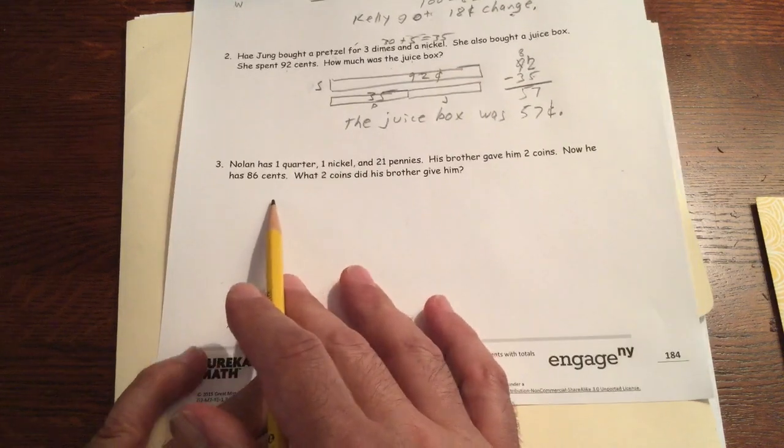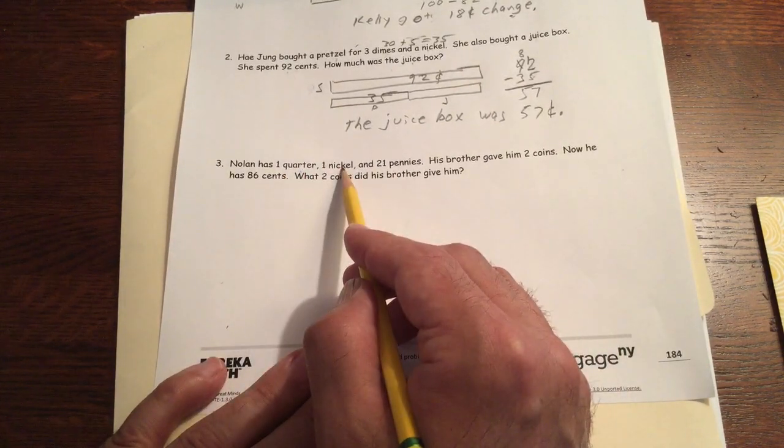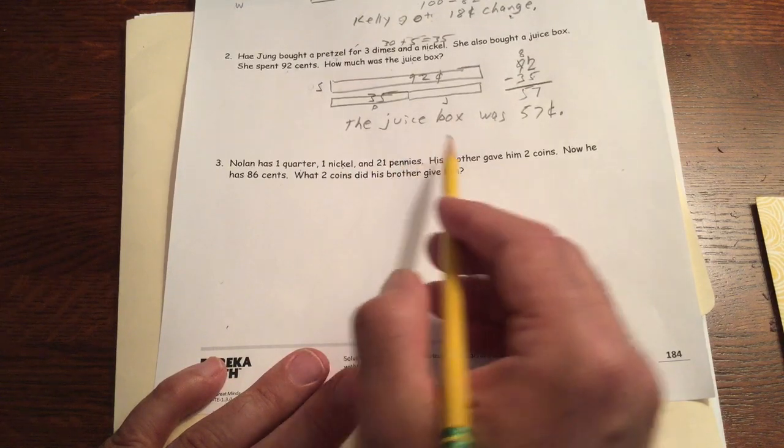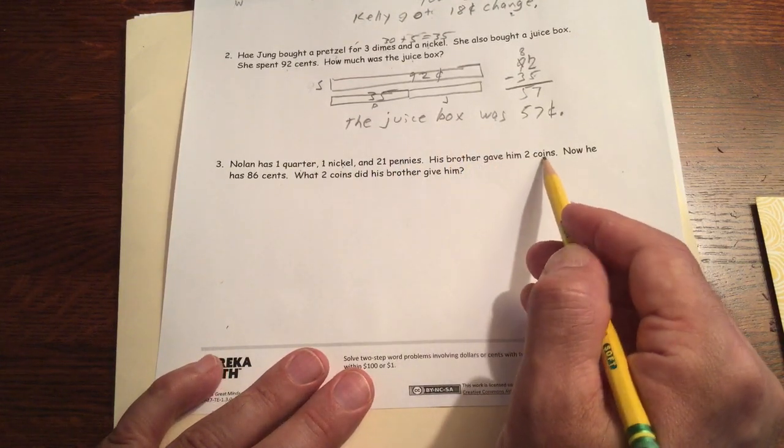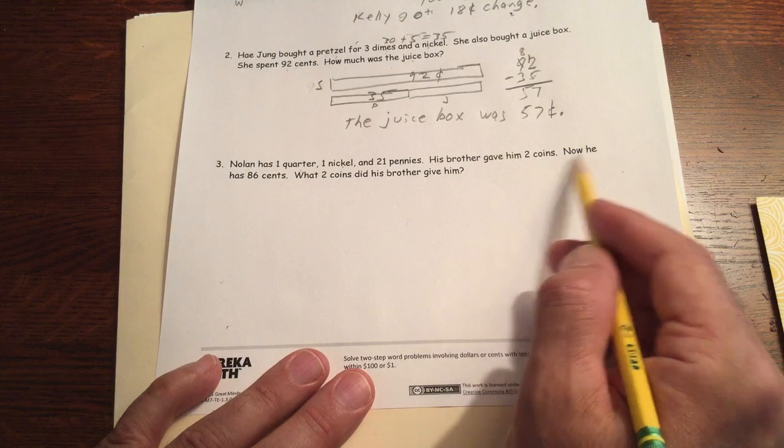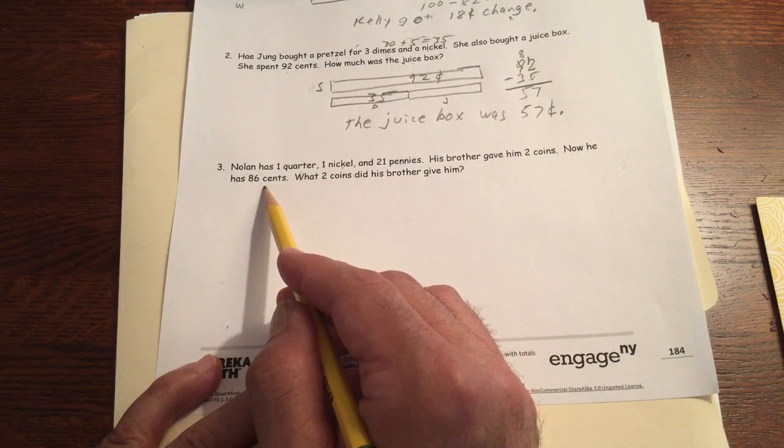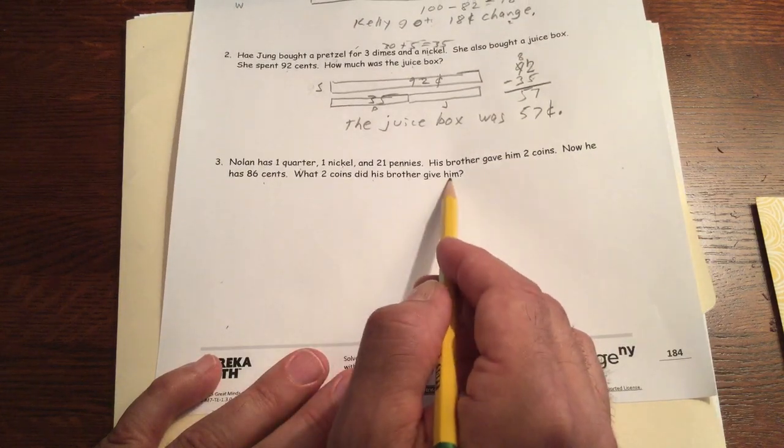Nolan has one quarter, one nickel, and 21 pennies. His brother gave him two coins, but doesn't say what kind of coins they are. Now he has 86 cents. What two coins did his brother give him?